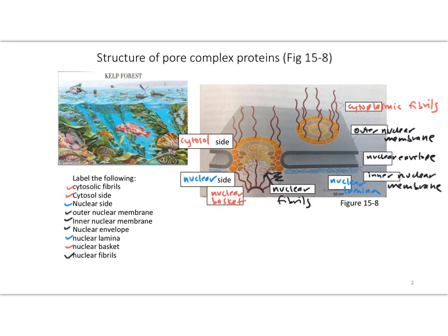The nuclear envelope is made up of two phospholipid bilayers. One is the outer nuclear membrane — notice that's continuous with the inner nuclear membrane, which is also a layer of phospholipids. Each of these is a phospholipid bilayer, so we end up with a double membrane system for the nucleus.